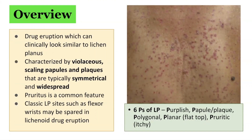Lichenoid drug eruptions are characterized by violaceous scaling papules and plaques that are typically symmetrically distributed and widespread. Pruritis is a common feature. Classic lichen planus sites such as the flexor wrists may be spared in lichenoid drug eruptions. As a recap, remember the six Ps of lichen planus.